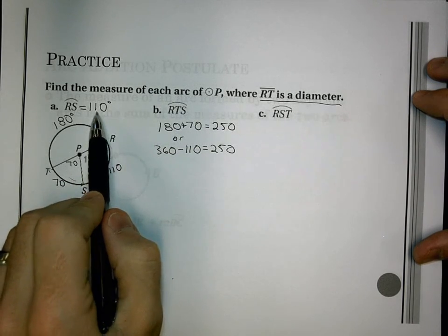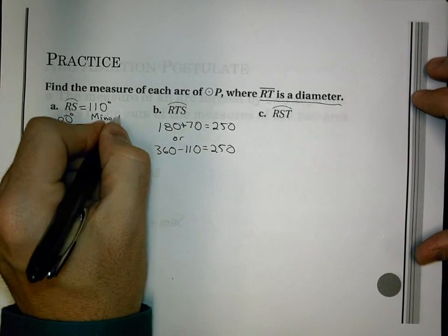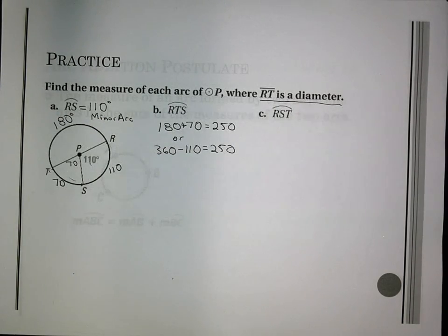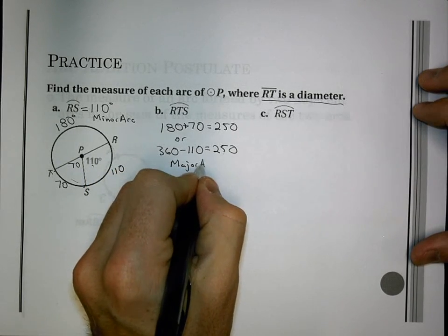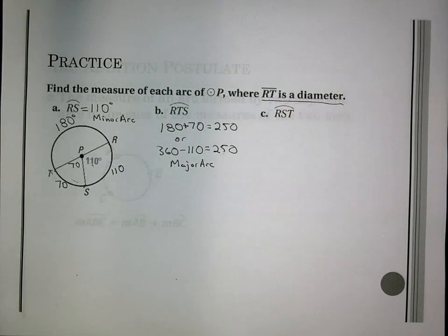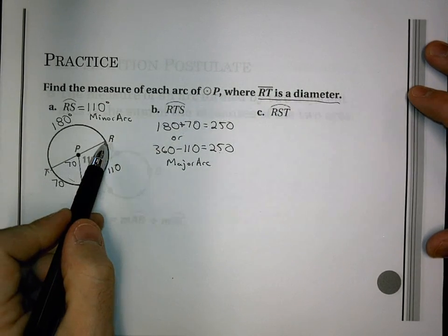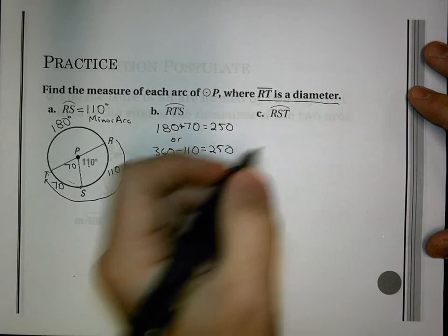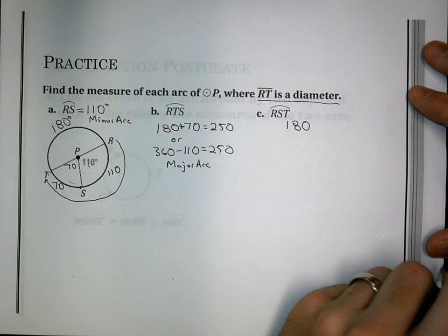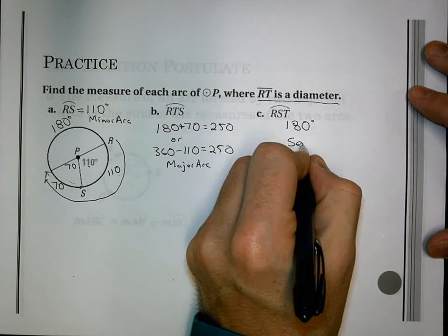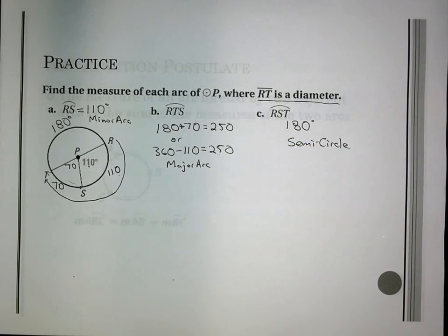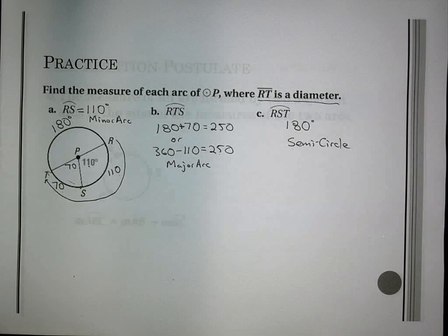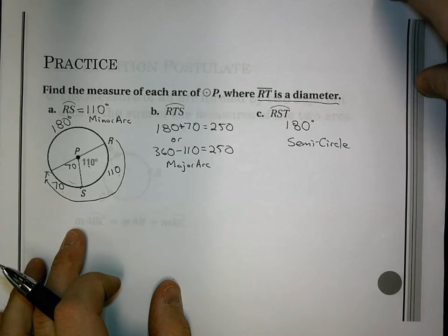Now, before we get too far ahead of ourselves, this 110 would be a minor arc. Because it's less than 180, it's less than half the circle. The 250 would be a major arc. Because it's more than 180, it's more than half the circle. And, then our last one is RST. Starts at R, goes through S, ends at T. We already know that RT is the diameter. Or, we could just add 110 and 70. And, it's 180 degrees. Which means this is going to be a semi-circle. So, we've kind of hinted towards, as we've gone through it so far, adding these arcs or adding these angles together. And, that's what our postulate is going to say next. And, that's our arc addition postulate.